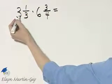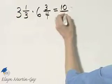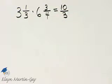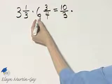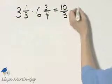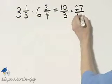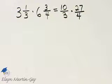3 times 3 is 9, 9 plus 1 is 10 over the original denominator of 3. Then times 4 times 6 is 24, 24 plus 3 is 27 over the original denominator of 4.